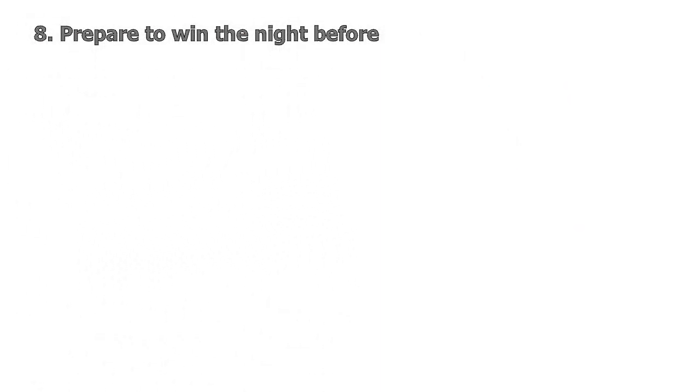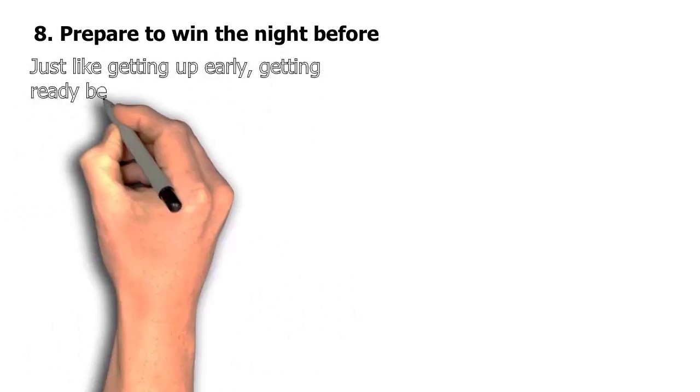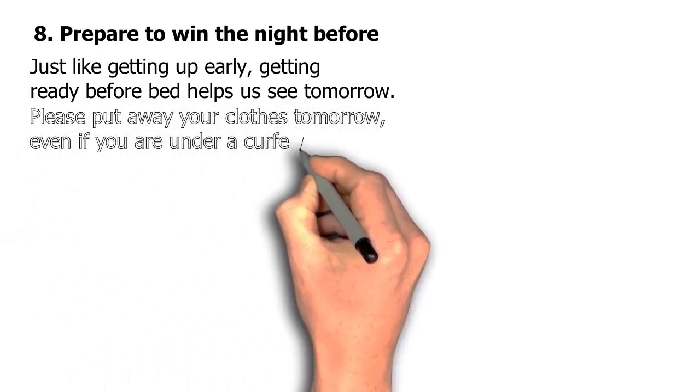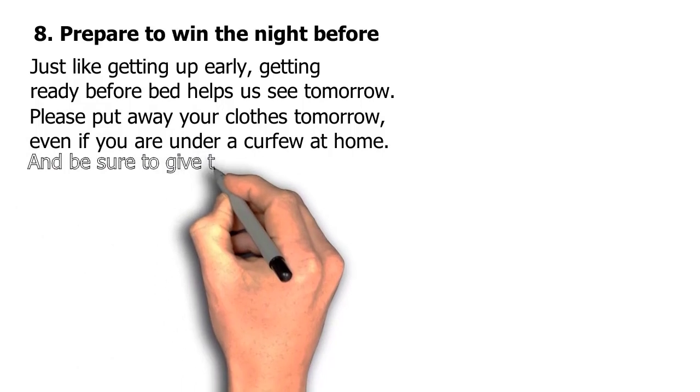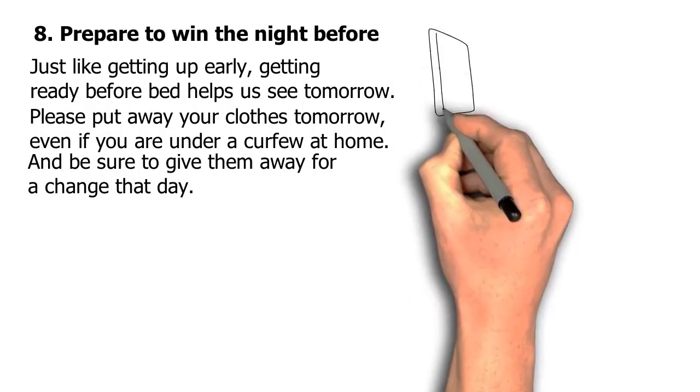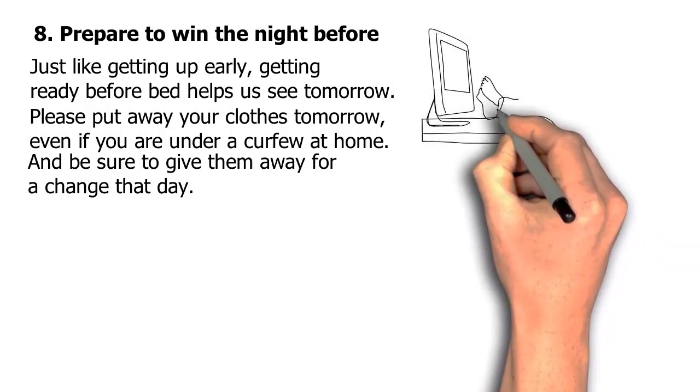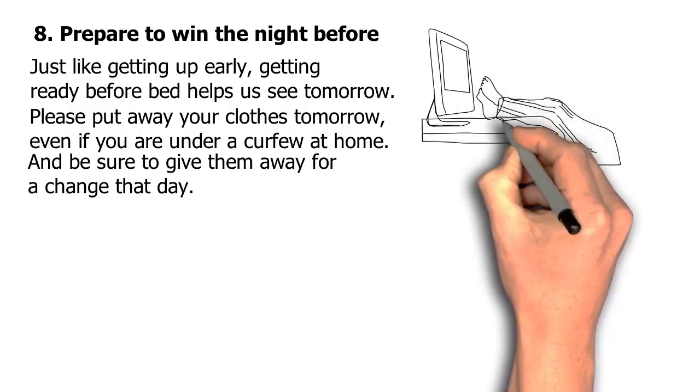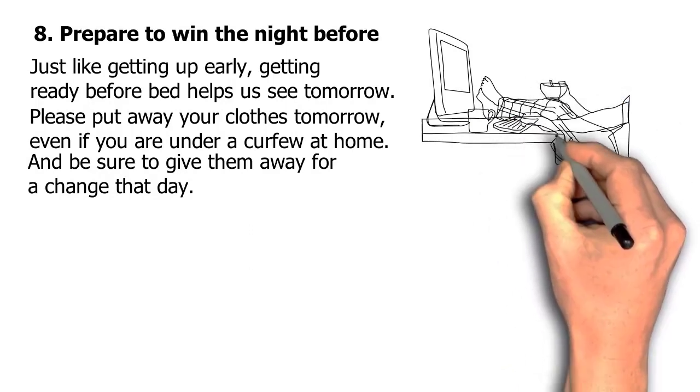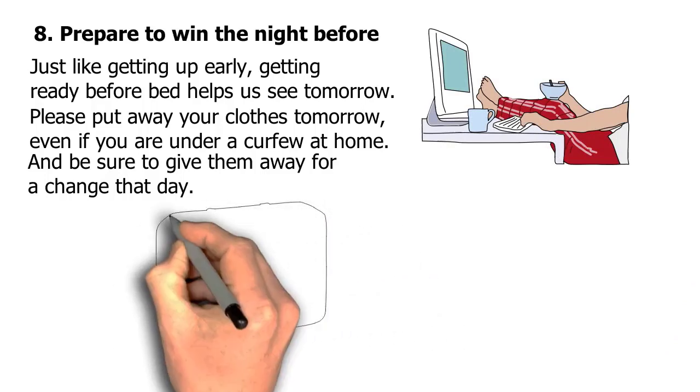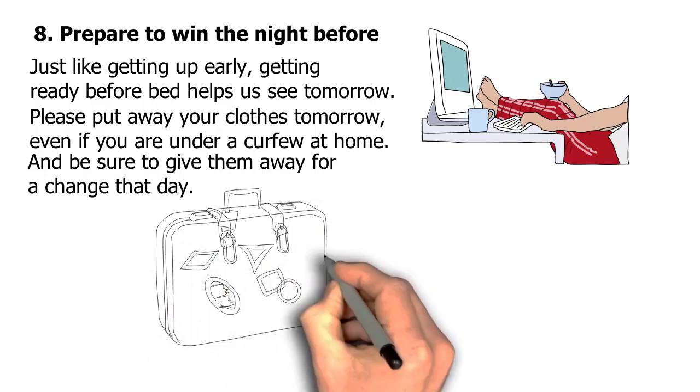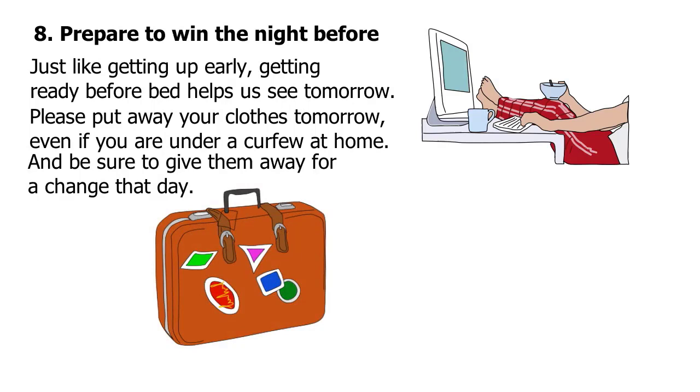Number eight, prepare to win the night before. Just like getting up early, getting ready before bed helps us see tomorrow. Put out your clothes tomorrow, even if you are under a curfew at home, and be sure to give them away for a change that day. Pack everything you need for breakfast, lunch and dinner, and take it with you in the evening. What takes 10 or 15 minutes to fall asleep can take 20 or 30 minutes between morning and the rest of the day. Under the right circumstances, you'll also make sure the bags are ready, the keys are on the counter, and everything is there for the future. If you put in the effort and plan for the future, you'll stop making mistakes in the morning. We all know that a lost key can completely ruin your schedule and your morning.